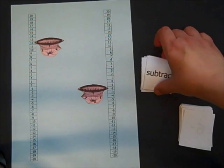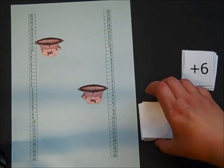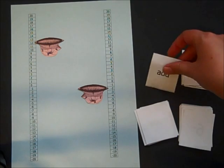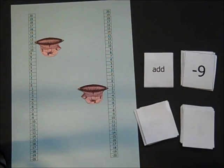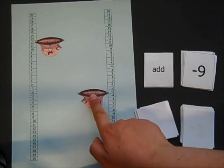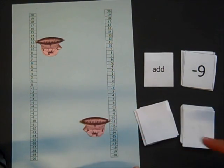I'm just going to turn these over because we've run out of operation cards. And so I have to add negative 9, so I have to add 9 sandbags. So I'm going to sink down 9 places like that.